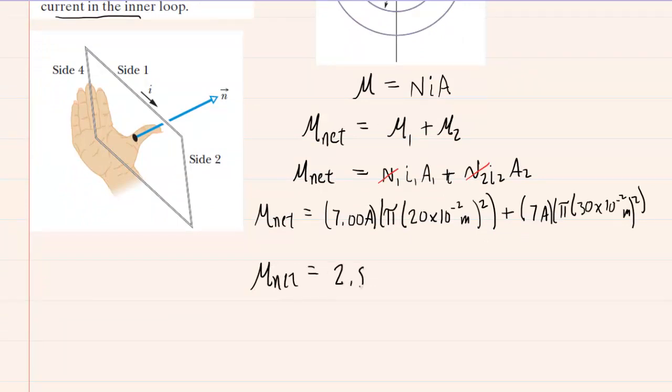And we end up with about 2.86, and the unit can be clarified. If you look at the setup, you have amps times meters squared right there. So that will be the unit of your net magnetic dipole moment. So there's the correct answer to part A.